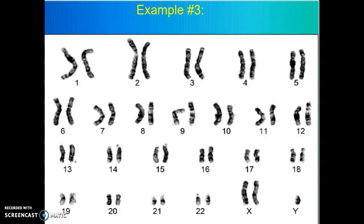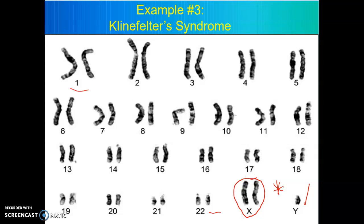Example number three. Look at chromosome pairs 1 through 22 first. I don't see any missing or extra chromosomes from number 1 through 22. So let's put our focus on the sex chromosomes. There's a Y I can see, but look right here — there's two X's. So that means you have a boy because there is an X and a Y, but you have two X's. So this is going to be a boy who has a condition called Klinefelter's Syndrome — instead of one X and one Y, you have two X's and a Y.